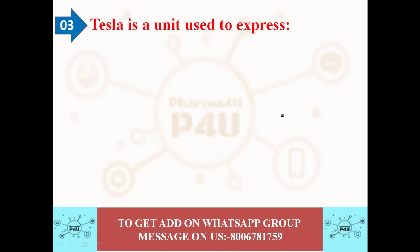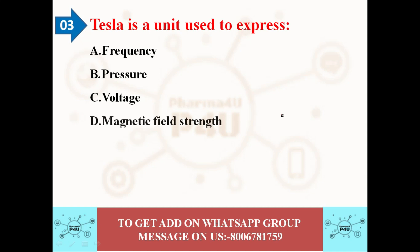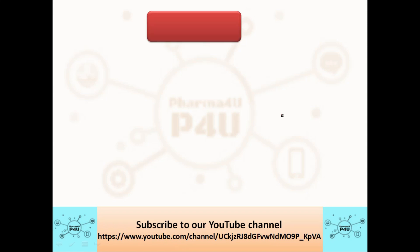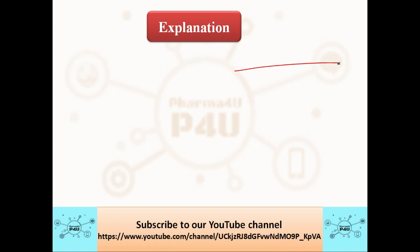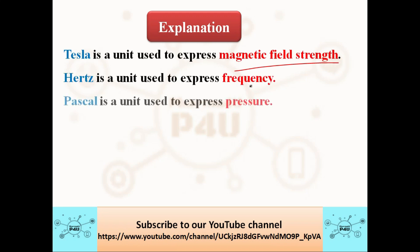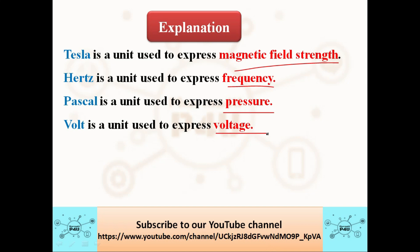The next question is: Tesla is a unit used to express — option A: frequency; option B: pressure; option C: voltage; option D: magnetic field strength. The correct answer is magnetic field strength. Tesla is a unit used to express magnetic field strength. Hertz is a unit used to express frequency, Pascal is used for pressure, and Volt is used to express voltage.